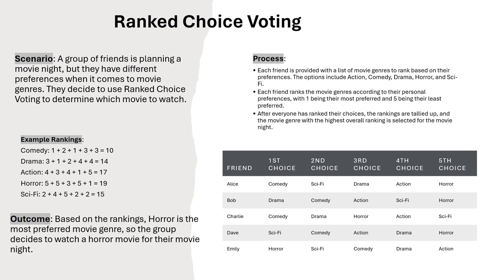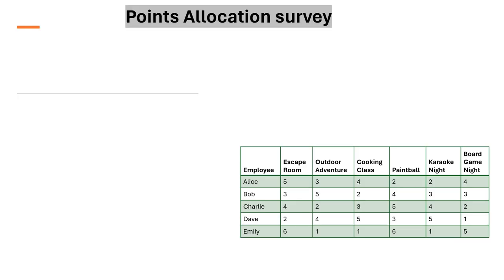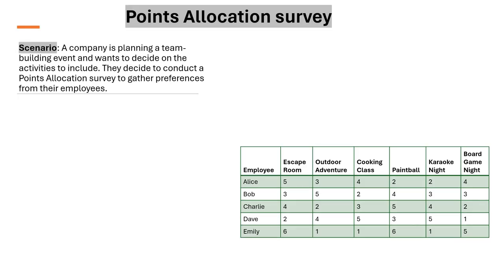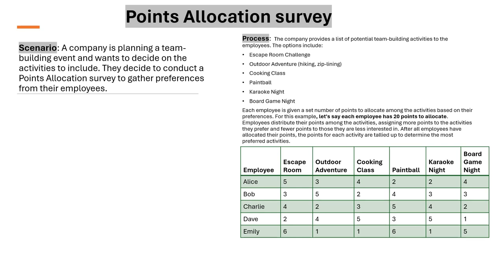Based on the ranking, horror is the most preferred movie genre, so the group decided to watch a horror movie on their movie night. Now let us take another example: point allocation survey.